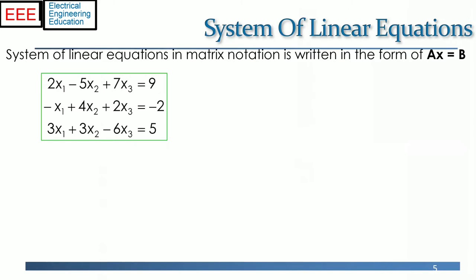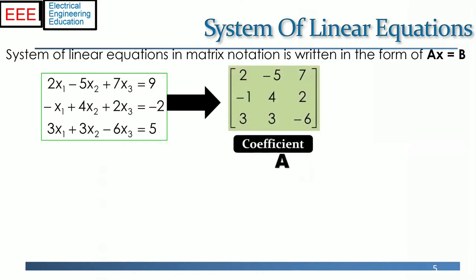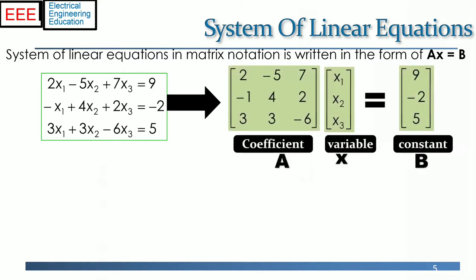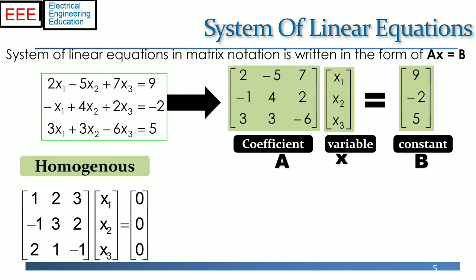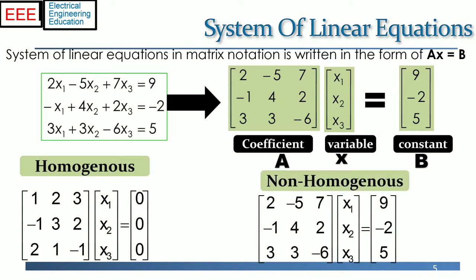For a three by three case, the system of linear equations in matrix notation is written in the form Ax = b — the matrix multiplication of the three by three coefficient matrix A and the column matrix x of three variables x1, x2, and x3. The result is the constant column vector b. If the entries of column vector b are zero, the system is homogeneous; otherwise non-homogeneous if at least one entry is non-zero. By finding the inverse of matrix A and multiplying with the column vector b, the solution gives the column vector x of unknowns.